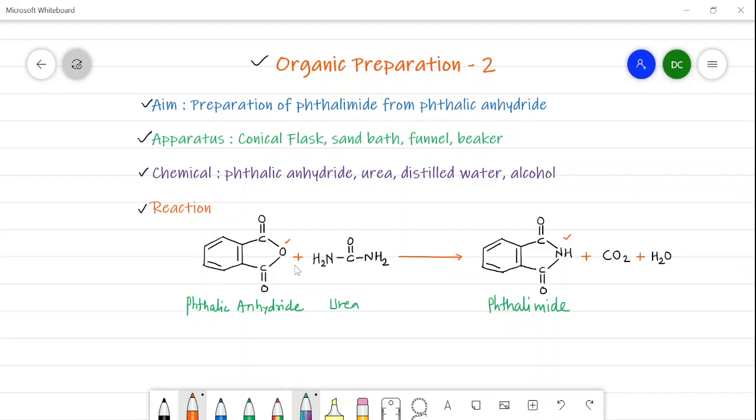Now this phthalic anhydride when it is heated with urea it will give phthalimide where there is removal of CO2 and water. As there is formation of CO2, this CO2 gas is liberated from the reaction, so that in this reaction we get one condition which is called as frothing of the mixture. In Marathi it is called as phase, so it is due to the formation of CO2.